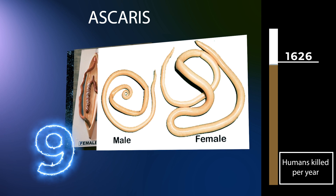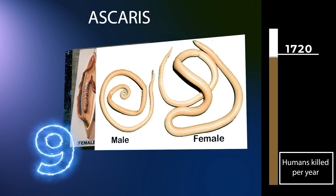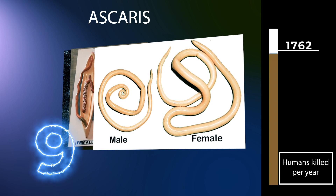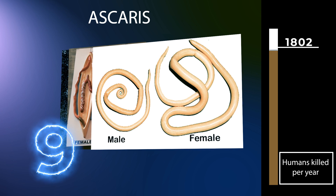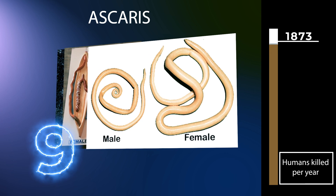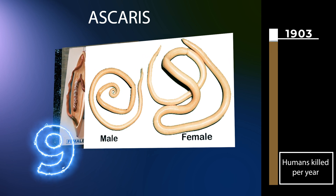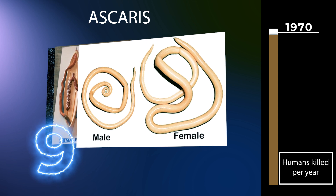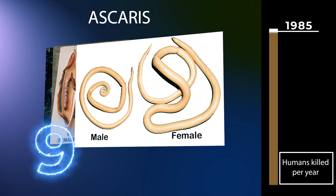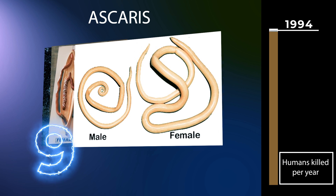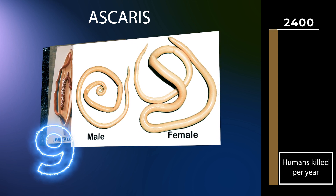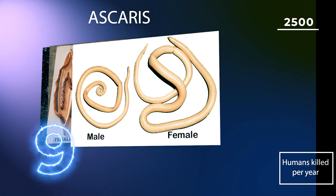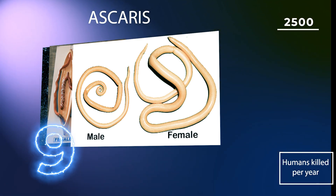Ascaris lumbricoides is the largest intestinal roundworm and is the most common helminth infection of humans worldwide. Infestation can cause morbidity by compromising nutritional status, affecting cognitive processes, inducing tissue reactions such as granuloma to larval stages, and by causing intestinal obstruction, which can be fatal.